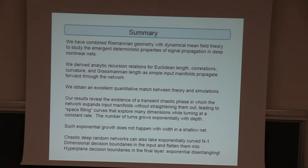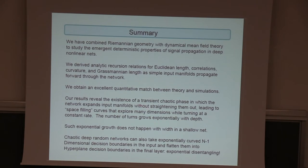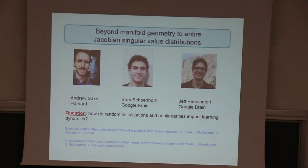To summarize: we combined Riemannian geometry with dynamical mean field theory to study emergent deterministic properties of signal propagation through deep nonlinear nets. We found analytic recursion relations that reveal an order-to-chaos phase transition in feed-forward networks, and that phase transition allows deep networks to do things that shallow networks cannot.